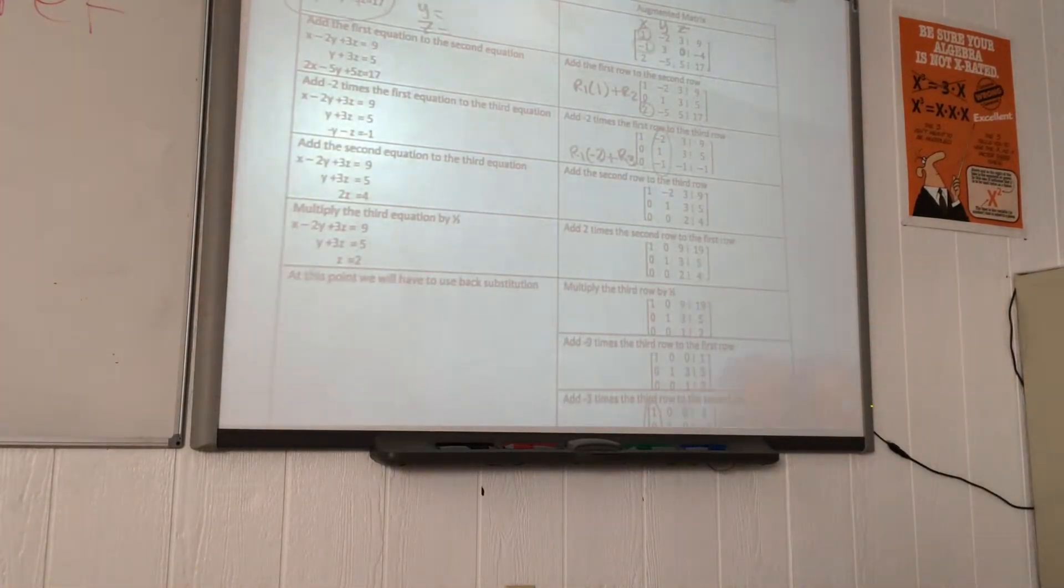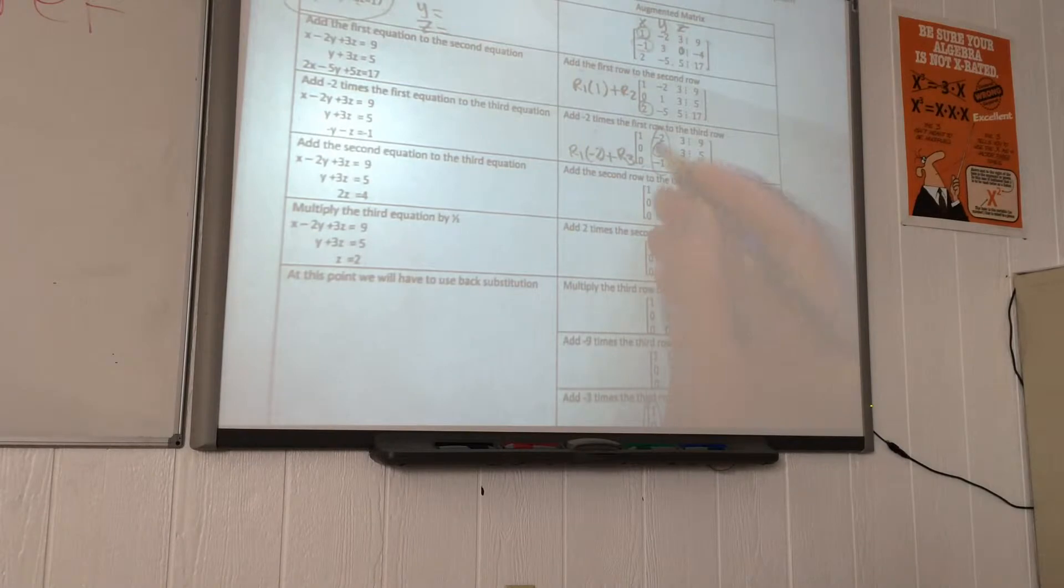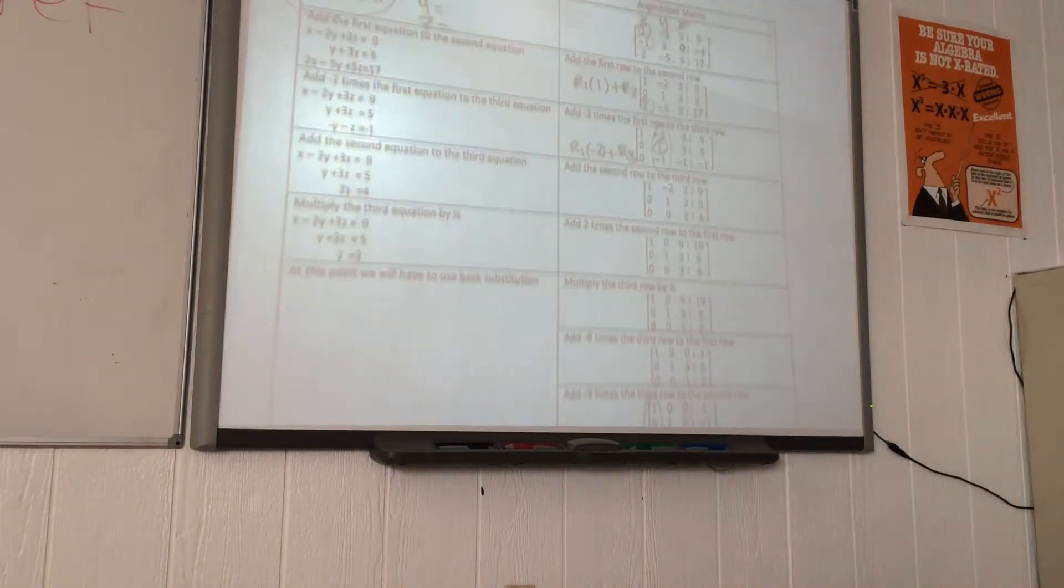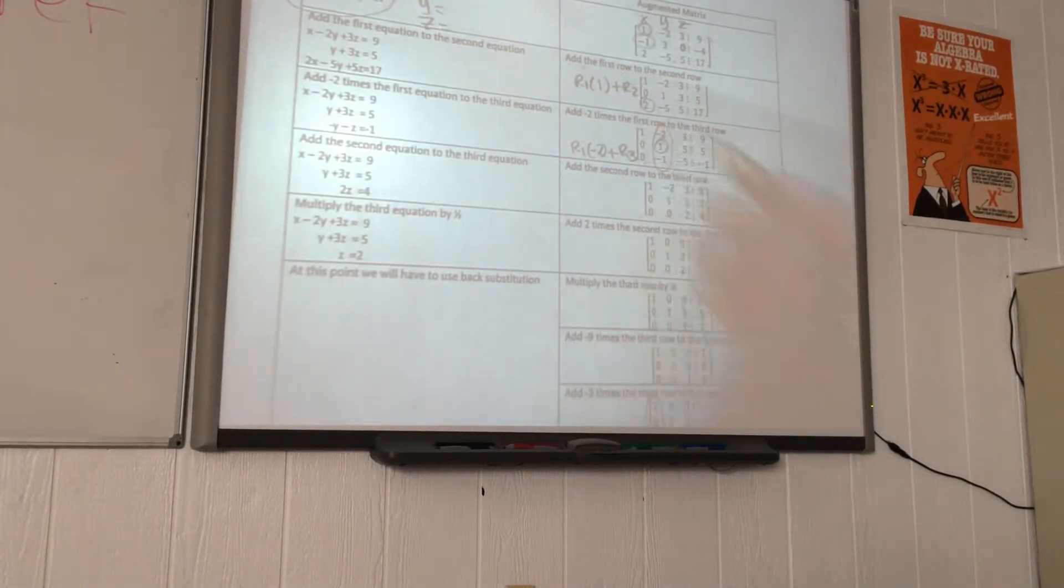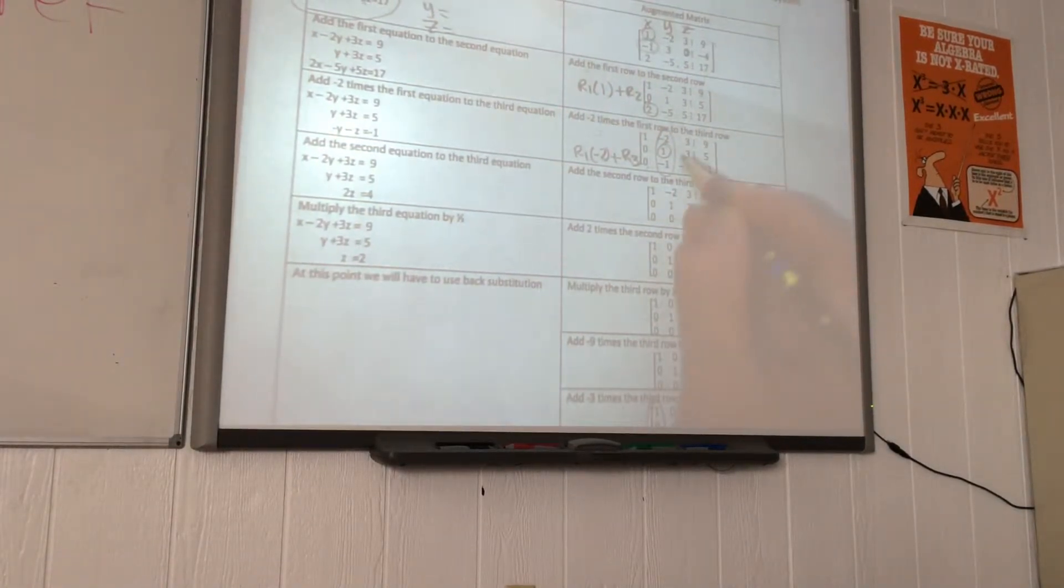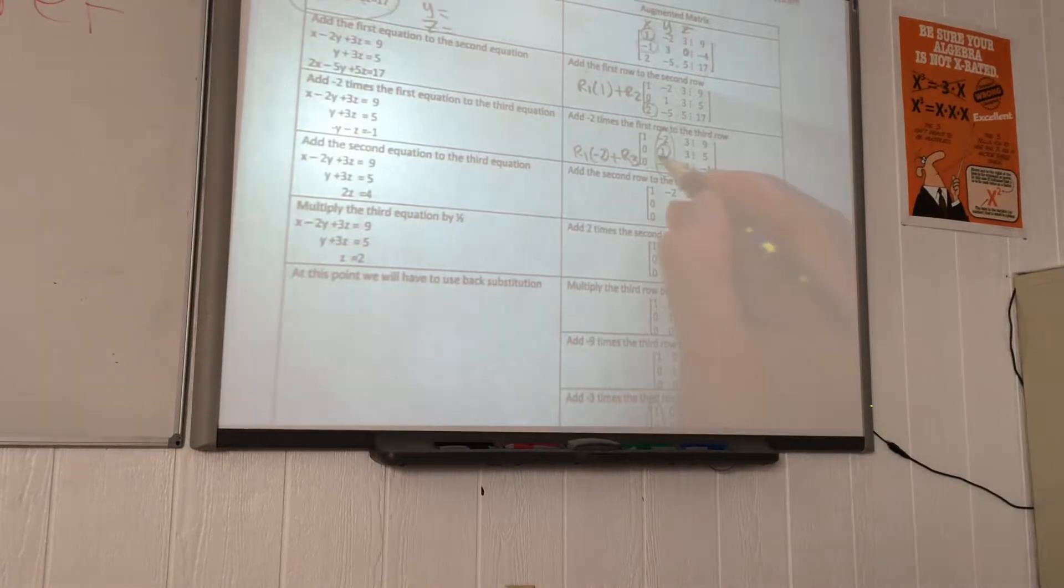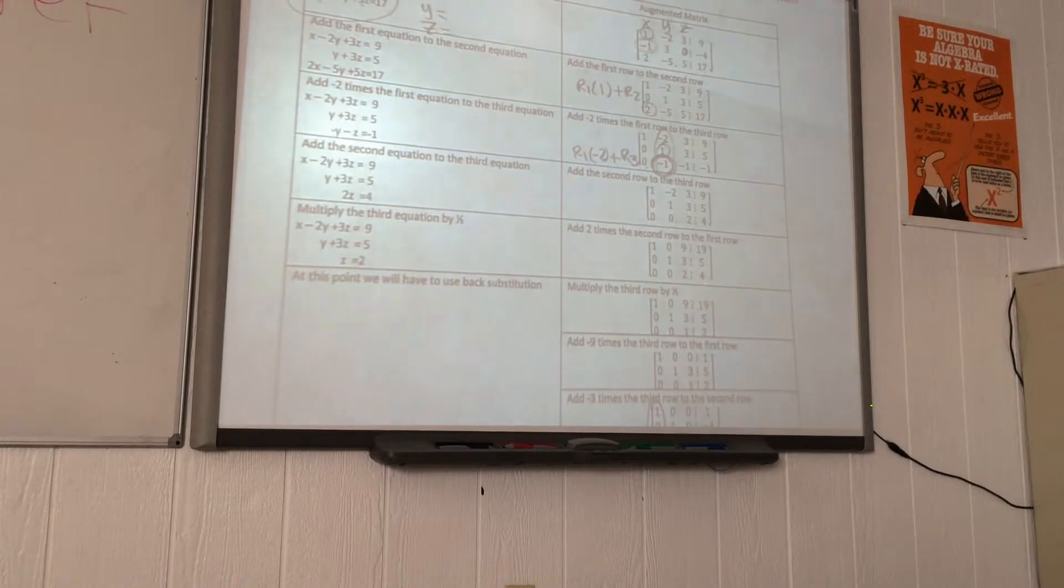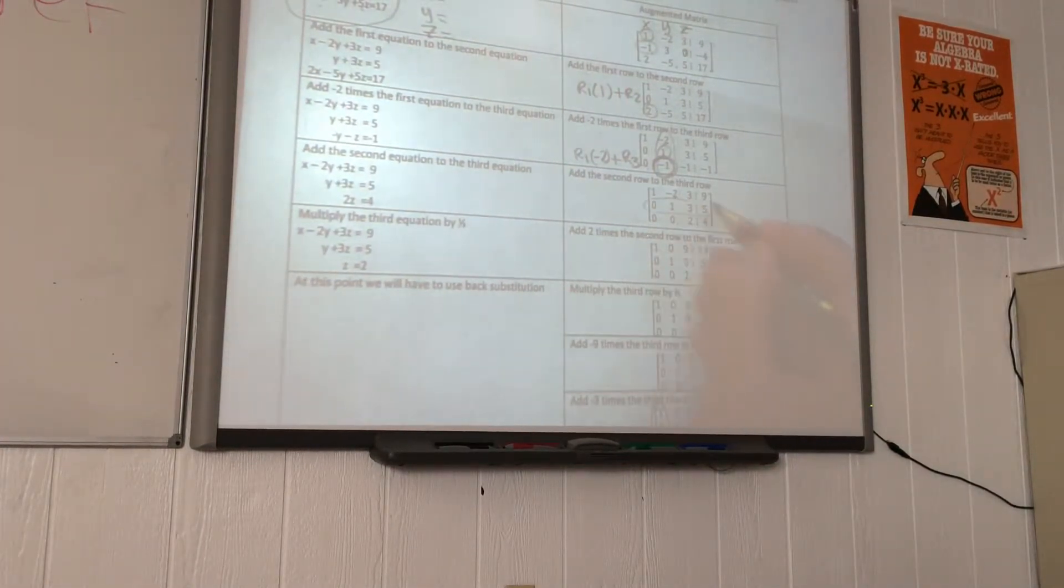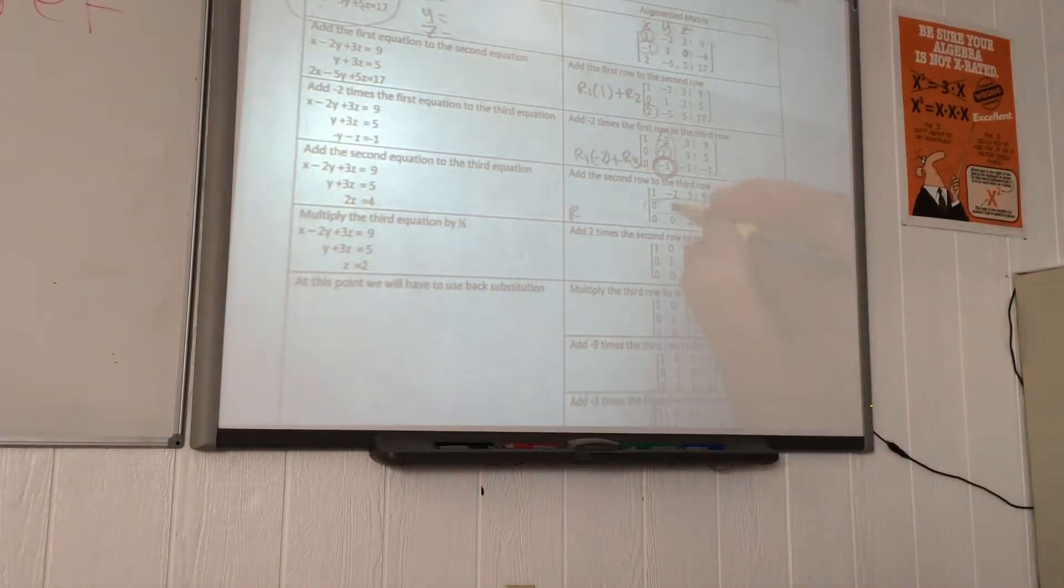What do we need to do first? The 1 or the zeros? The 1. And that one, luckily, we already have it, so we can skip that step. Now we need to turn this negative 1 into a 0. Which one is the leading row now? It's not R1 anymore. R2 is the leading row.